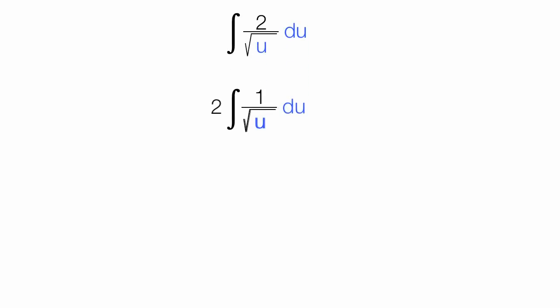I'm going to factor out the 2. And this square root of u is equal to u to the 1 half power. So I have 2 times the integral of 1 divided by u to the 1 half power, du.